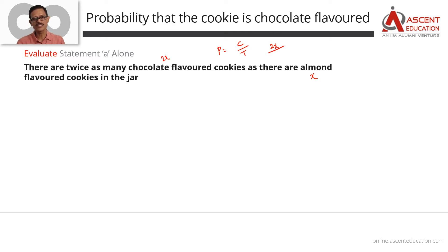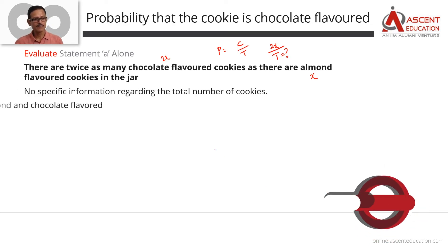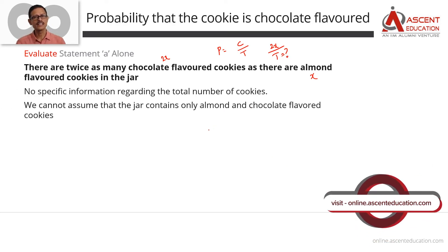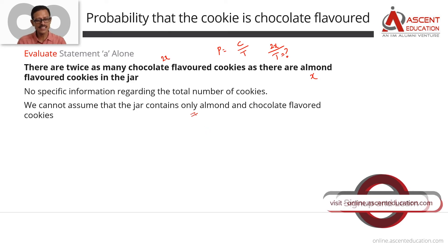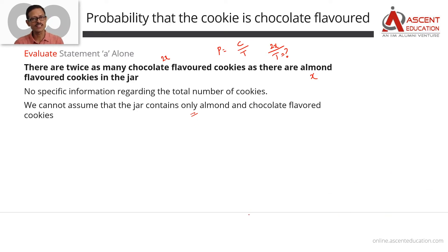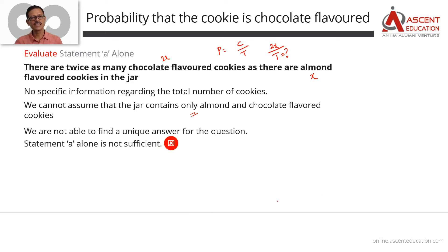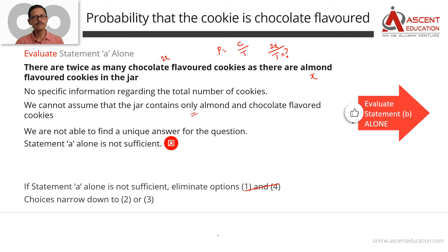If we have more than two types of cookies, we know the numerator is 2X but we don't know the total denominator. So Statement A is a trap — please do not assume that the jar has only two types of cookies. Because we have no information about the total number of cookies, Statement A alone is not sufficient. Since A alone is not sufficient, we can eliminate two answer options: option 1, which says A alone is sufficient, and option 4, which says each statement is independently sufficient.